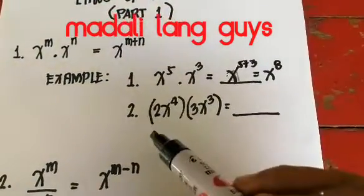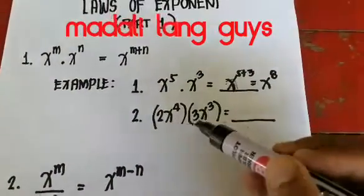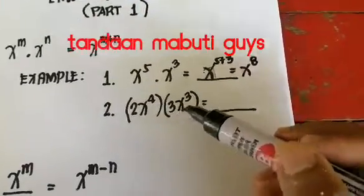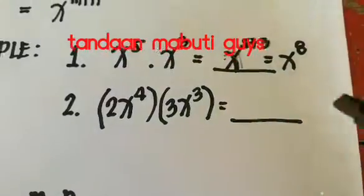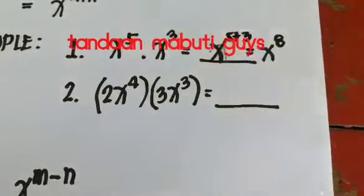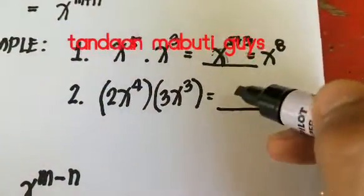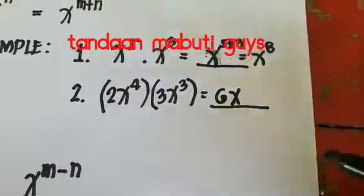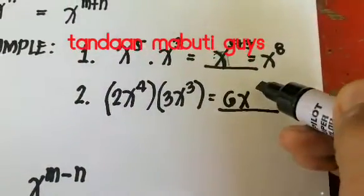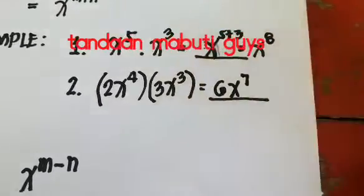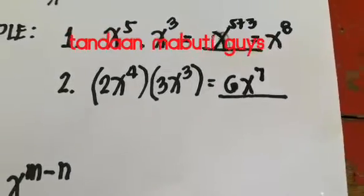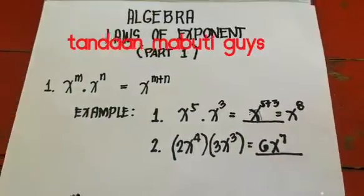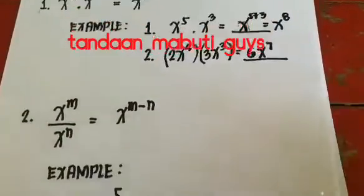How about if there is a coefficient in the base? For example: 2x raised to 4 multiplied by 3x cubed. For the coefficients, you multiply them as normal numbers — two times three equals six. Then copy the base x and add the exponents: four plus three equals seven. So the answer is 6x raised to seven. That is Law Number One of the laws of exponents.